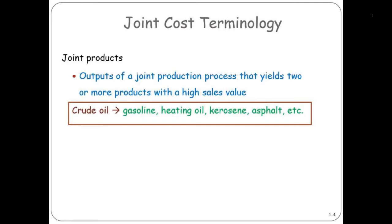One thing you can see as you break down crude oil is that some of its products come in a liquid form, but asphalt is a solid. That makes it a little bit harder to allocate the cost when the basis upon which you would view them is different.